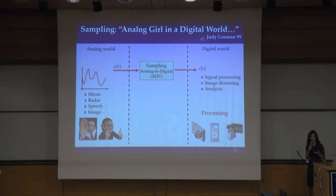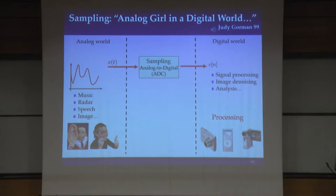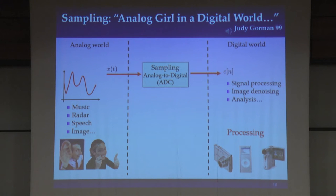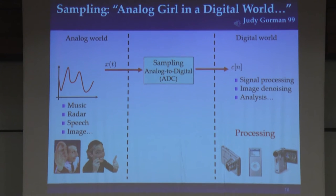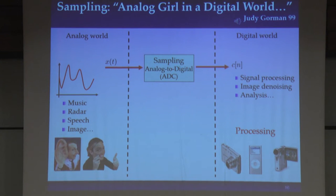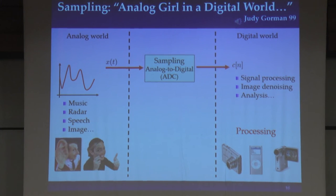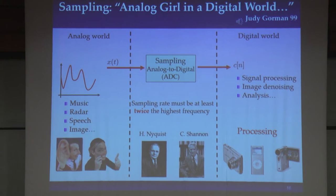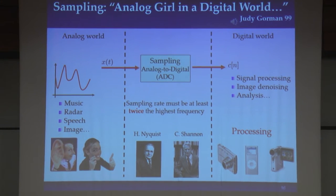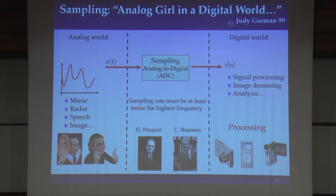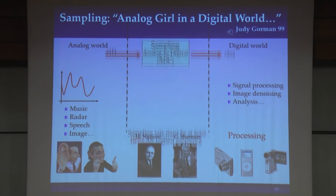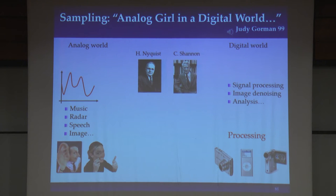If we want to faithfully represent continuous time signals in digital time, we have to design our ADC — our analog-to-digital converter — so that we preserve the important information in the signal. Today, essentially all ADCs in industry are developed based on the well-known Shannon-Nyquist theorem, which says you have to sample signals at twice the highest frequency. This is a very fundamental theorem that enabled the digital revolution, but in modern applications, it has two main drawbacks.